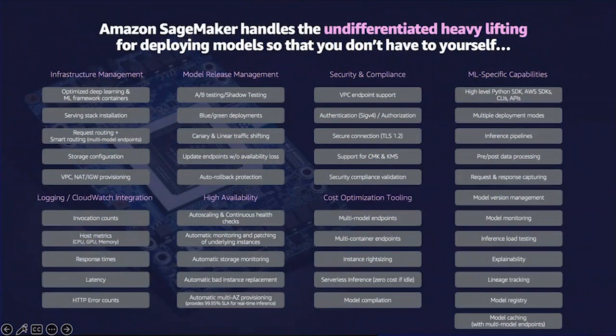There are literally hundreds of big things that SageMaker does for you that DIY would have to spend time and resources to build yourself. First is just how much infrastructure SageMaker helps you set up and manage — from instances and containers optimized with machine learning libraries and frameworks, to storage, networking and load balancing, to the encryption layer. All of this is handled for you.